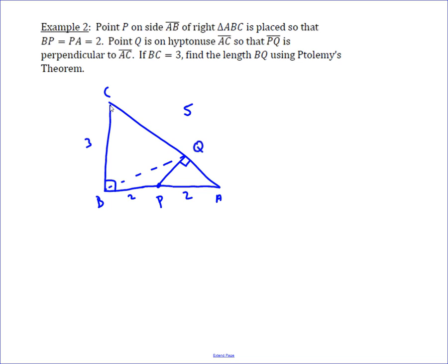To use Ptolemy's theorem, you first have to show that you have a cyclic quadrilateral. It turns out that CBPQ is cyclic because B and Q are both right angles. If you ever have a quadrilateral with opposite angles being right angles, then it's cyclic.